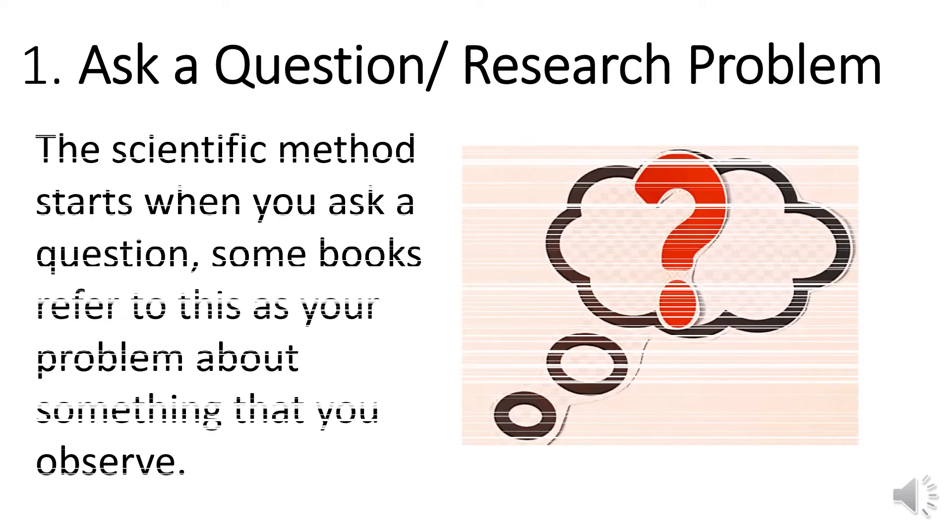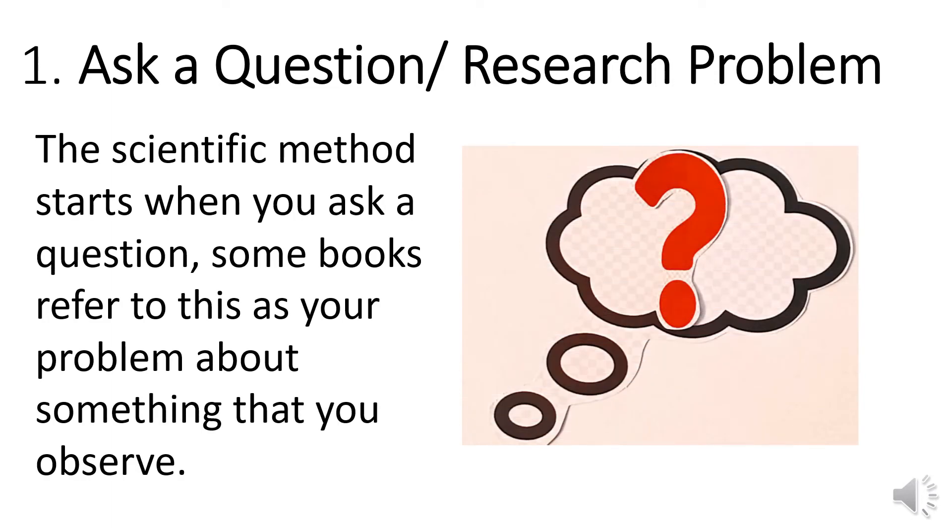Step 1: Ask a question or find your research problem. The scientific method starts when you ask a question. Some books refer to this as your problem, but something that you observe. How, what, when, who, which, why, or where. It is important that your questions must be something that you can measure, preferably with a number.